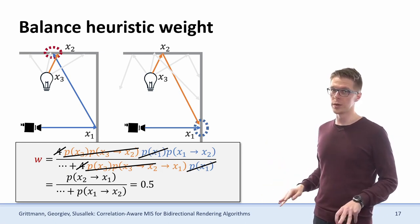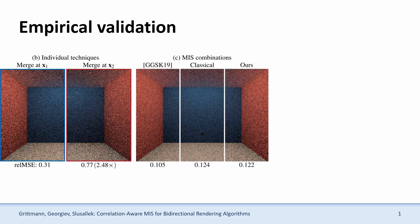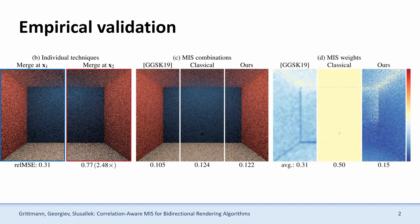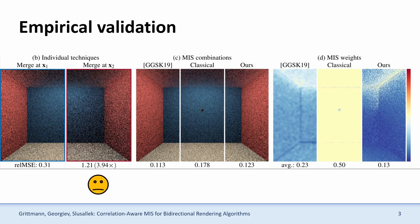No matter what the variance is and no matter what amount of correlation there might be. In this simple example, we see the rendered image of our two merging techniques rendering just the indirect illumination component. In the center, we have different MIS combination strategies: the classical balance heuristic, our new heuristic, and the variance-aware weights. On the right, we have the actual MIS weights used to combine our two merging techniques. As you can see, the balance heuristic just assigns 0.5 to both of those mergers. In the case where the light source is close to the bottom of the box, that works reasonably well. But if we move closer to the ceiling, there is quite some increase of noise in the second merge, and that's completely ignored by the balance heuristic.